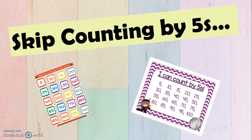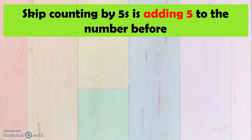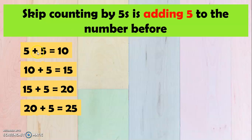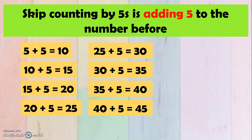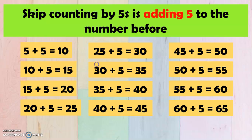Now we go to skip counting by 5s. Skip counting by 5s is adding 5 to the number before. So we have here 5, and then we add 5, so it's 10. 10 plus 5 is 15, 15 plus 5 is 20, 20 plus 5 is 25, 25 plus 5 is 30, 30 plus 5 is 35, 35 plus 5 is 40, 40 plus 5 is 45, 45 plus 5 is 50, 50 plus 5 is 55, 55 plus 5 is 60, and 60 plus 5 is 65. The same goes with the other numbers.